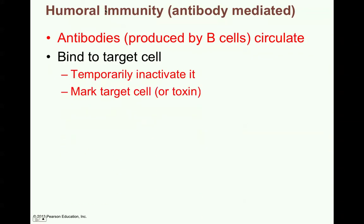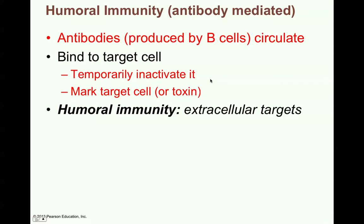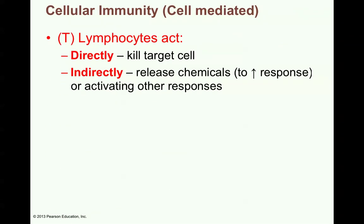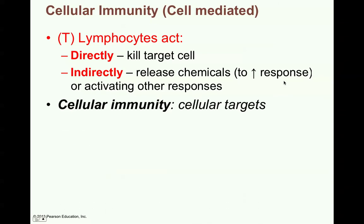Humoral immunity, or antibody-mediated, involves antibodies produced by B cells that circulate. They bind to the target cell, pathogen, or foreign cell — temporarily inactivating it, marking that cell or the toxin produced by a bacterium. It's called humoral immunity because it has extracellular targets. Cellular immunity or cell-mediated, by T cells or T lymphocytes, acts directly on the target cell to kill it, and also indirectly by releasing chemicals to increase the response or activating other responses to the infection. Cellular immunity has cellular targets.